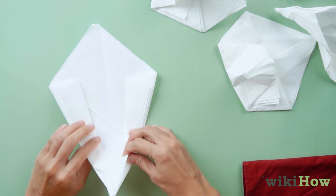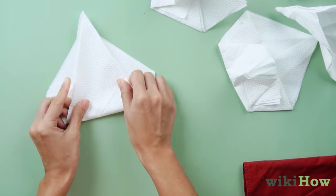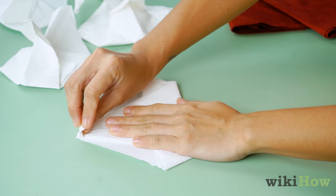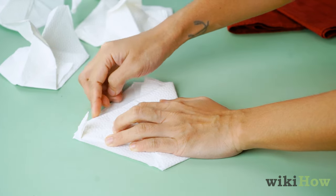Take the bottom corner of the napkin and fold it up so it extends just past the top corner. Fold down the very tip of the new top corner to make the beak of the swan.